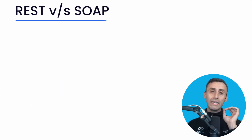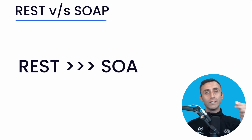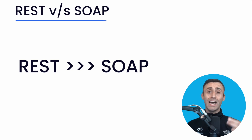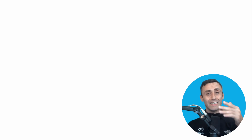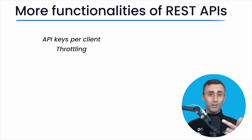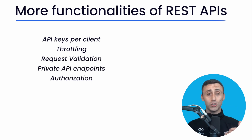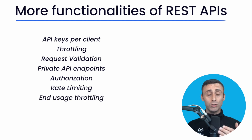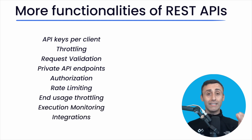I'm sure you now understand why REST APIs are preferred over SOAP APIs and why they are easier for everyone to use. Going deeper, you will find more functionalities that REST APIs entail. Some of them are API keys per client, throttling, request validation, private API endpoints, authorization capabilities per client, rate limiting and user throttling, execution monitoring, and most importantly, integrations with various other private and public endpoints.